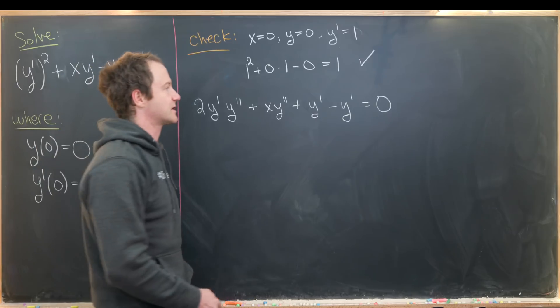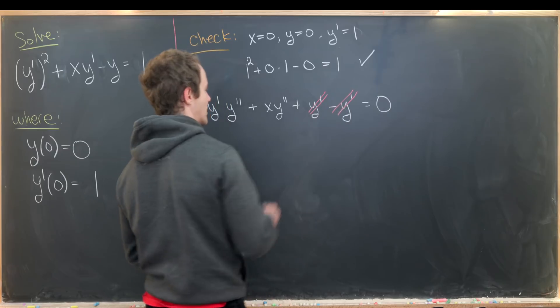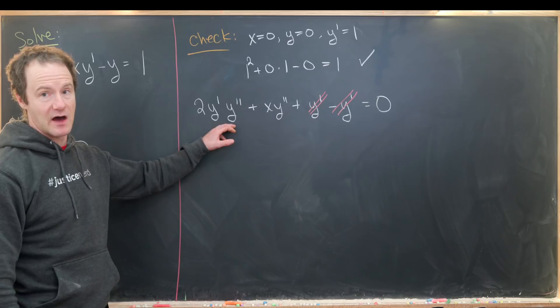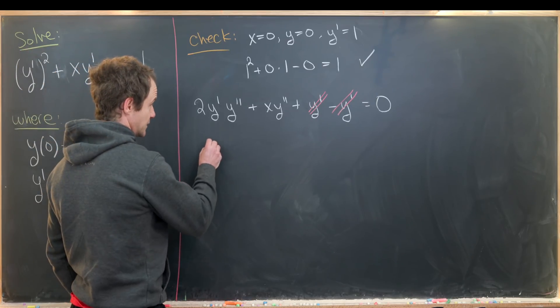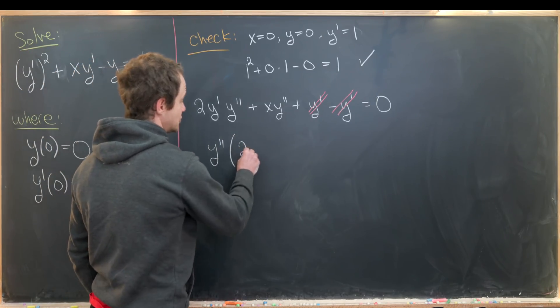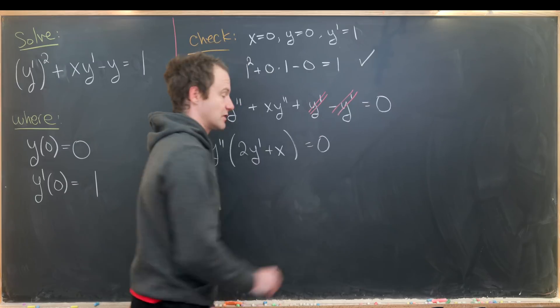Now let's do a little simplification. We can cancel this y' with this y', and then we can also factor a y'' out of this. So that'll leave us with y'' times the quantity (2y' + x) equals 0.